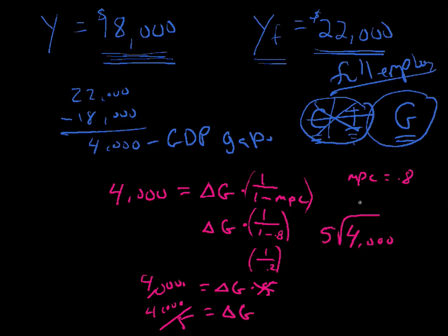5 goes into 40, let's see, 5 times what is 40? I think it's 8, so that's 40, 800, that's our answer. So the change in G equals 800.